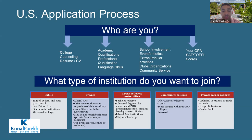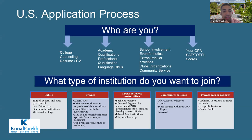Understanding the educational system is also very important. Specifically, knowing the type of institution you want to join — before that, you need to know what is the difference between all the types of institutions that exist in the United States. In the United States, there are public universities, private universities, four-year college universities, community colleges, and private career colleges.